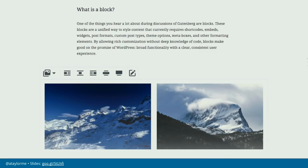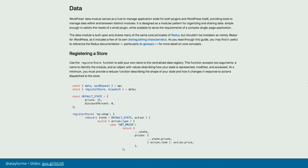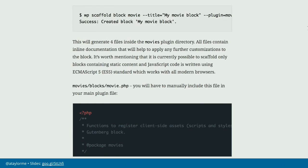They started publishing documentation and examples of what this is going to look like. Here we have some documentation on the development stuff going on under the hood, but it was really a big chunk of developers from Automattic with Matt leading this charge doing a lot of this development. It was on GitHub, but it still didn't have a lot of involvement and people couldn't quite see what was going on.